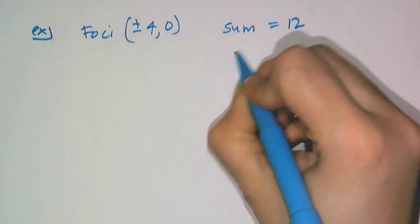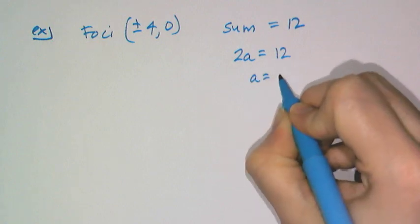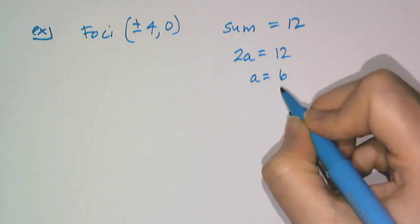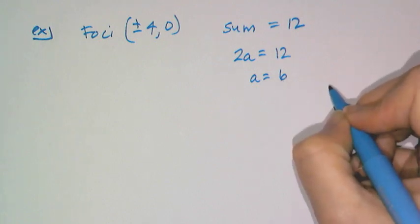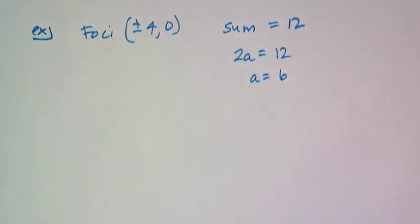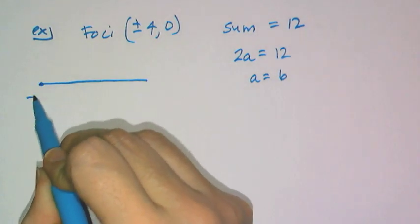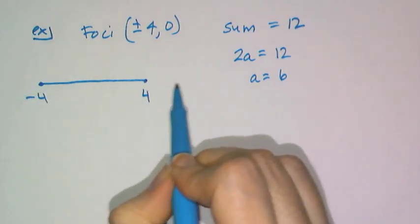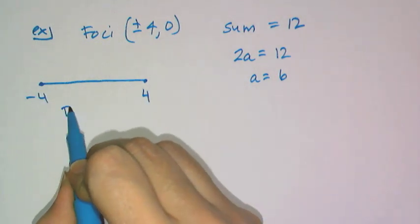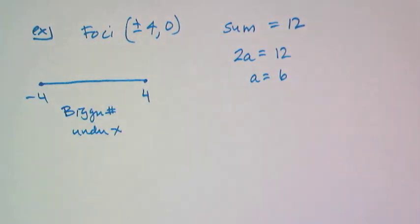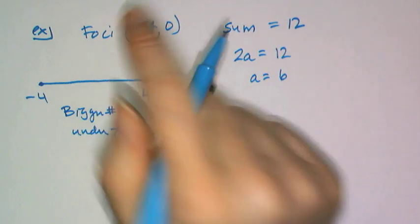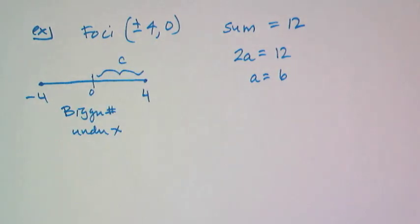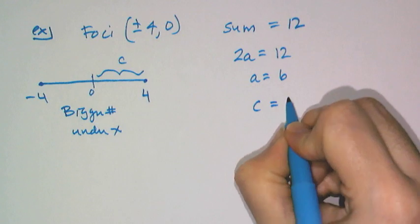The sum of focal radii represents 2a, so a equals 6 — that's the length of half the major axis. My foci are at negative 4 and 4, which means the major axis is horizontally oriented, so the bigger number goes under x. The distance from the center to a focus means c equals 4.